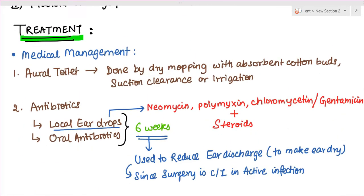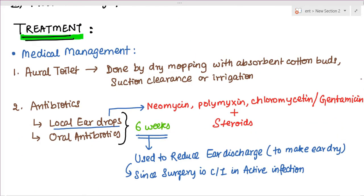For treatment, we can start with medical management. First is aural toilet done by dry mopping with absorbent cotton buds, suction clearing, and irrigation, but syringing is not advised.